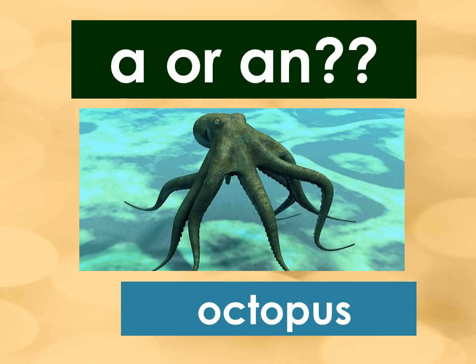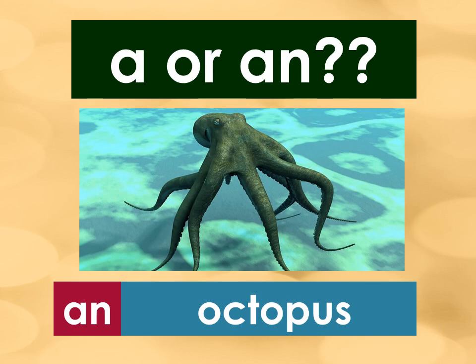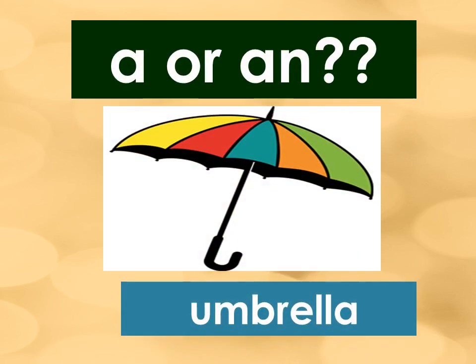Octopus. That's correct. Octopus starts with a vowel letter O. We use the article AN when the word after it starts with a vowel letter. Umbrella. That's correct. It's AN. Umbrella starts with a vowel letter U. We use the article AN when the word after it starts with a vowel letter.